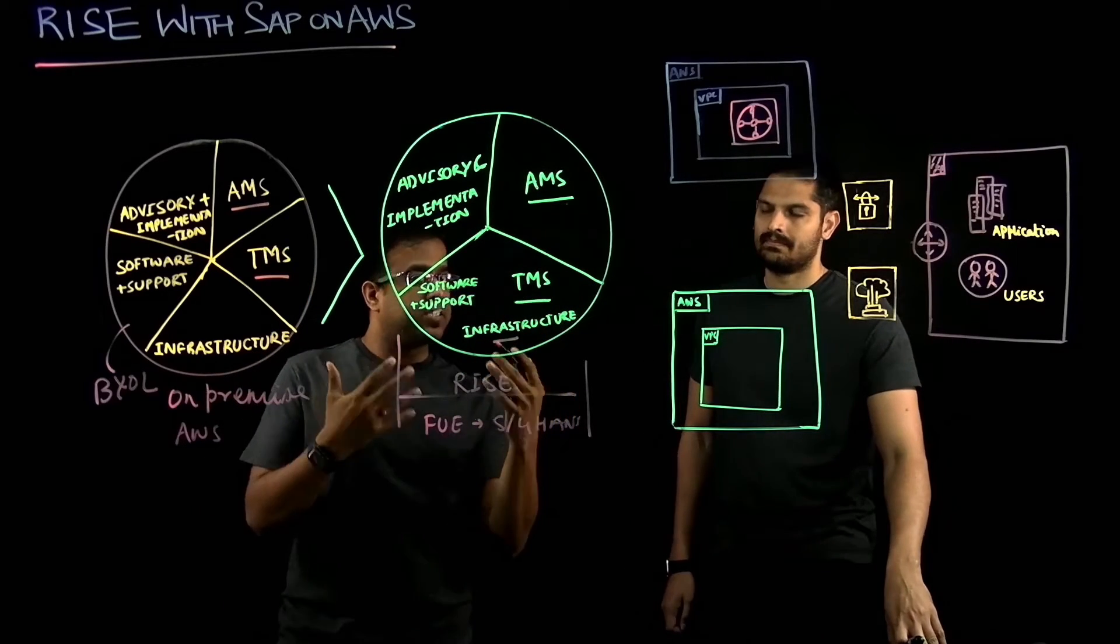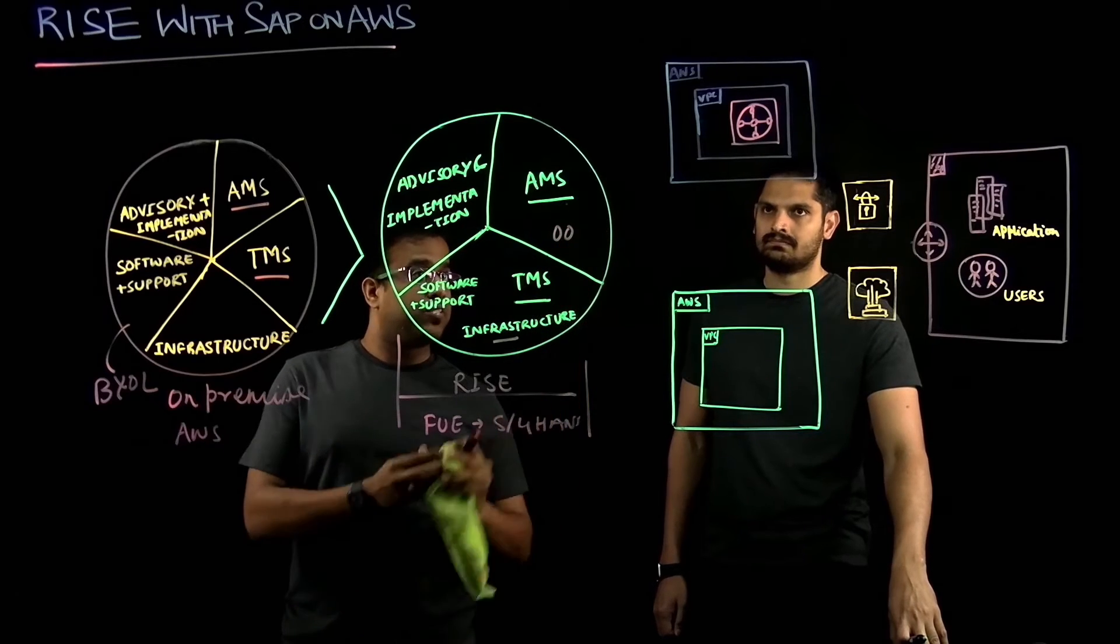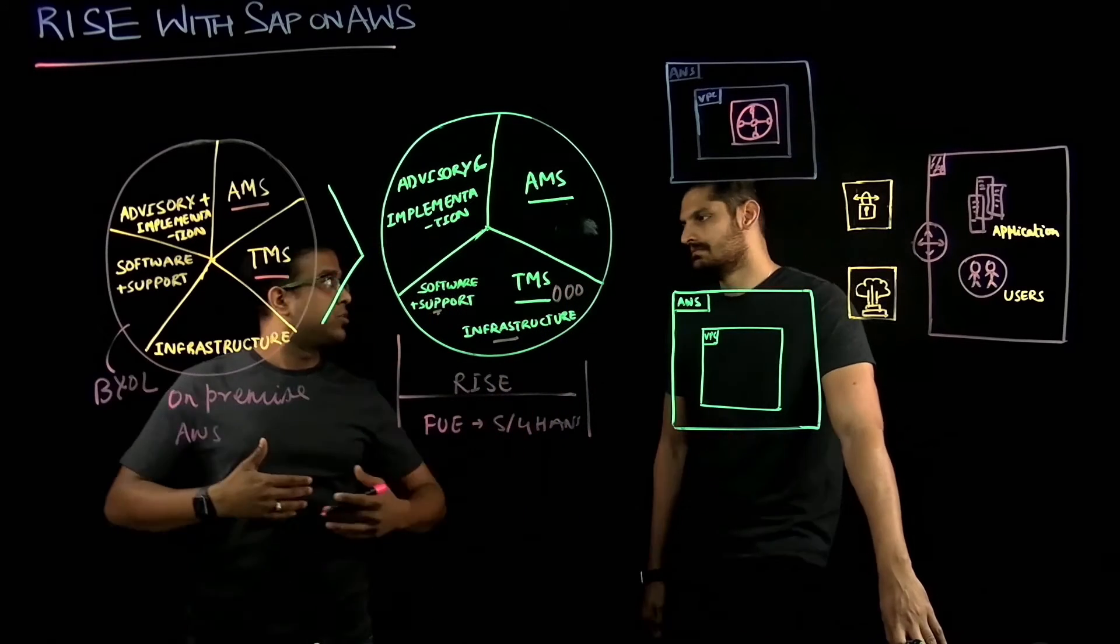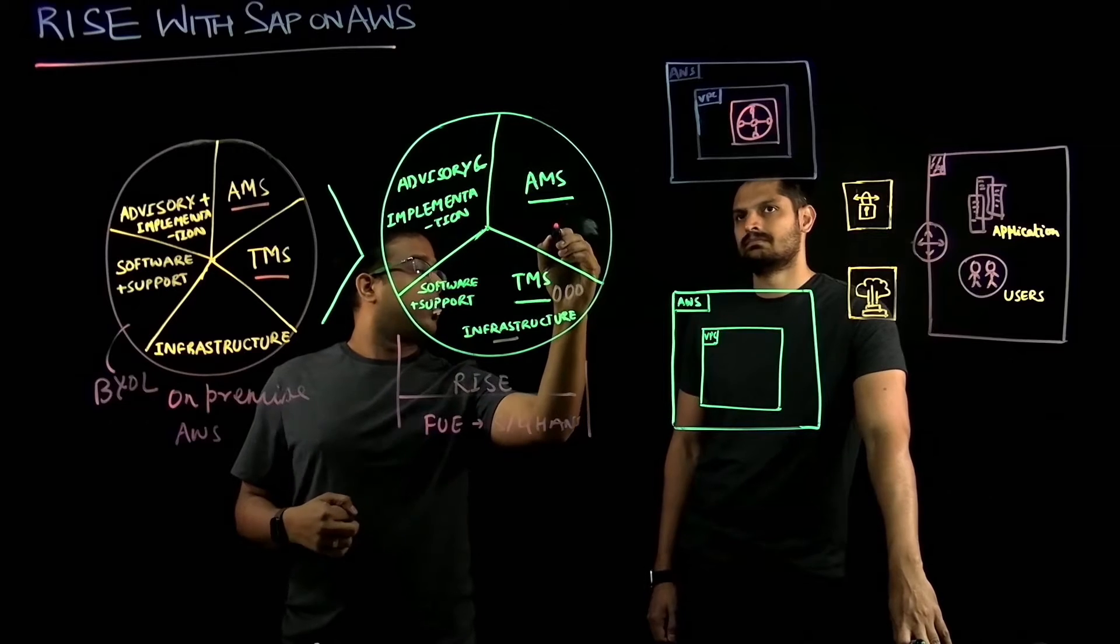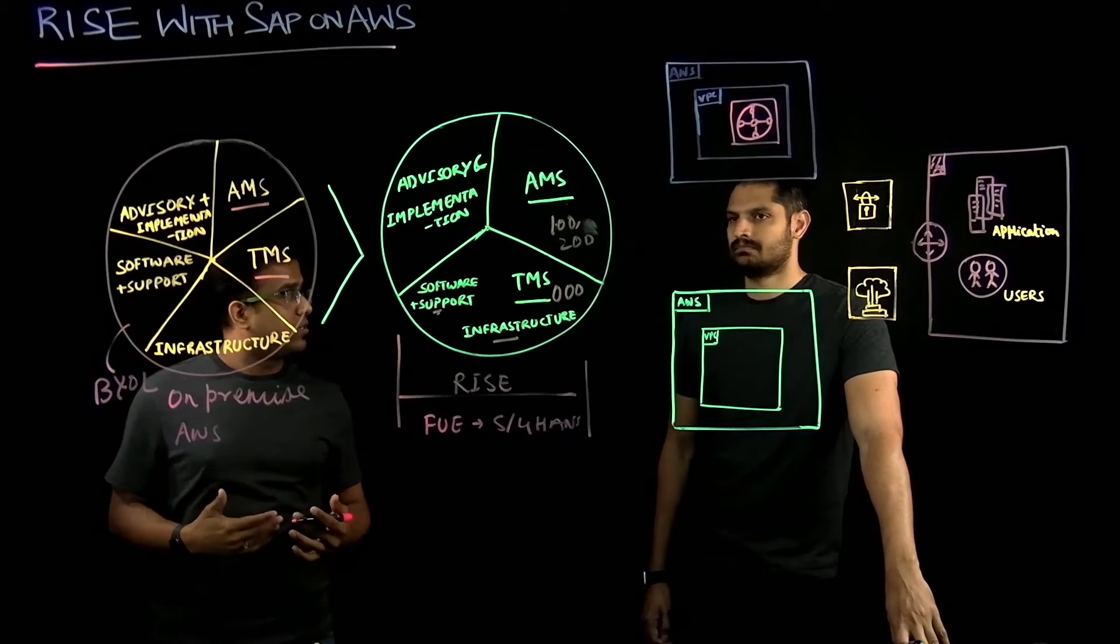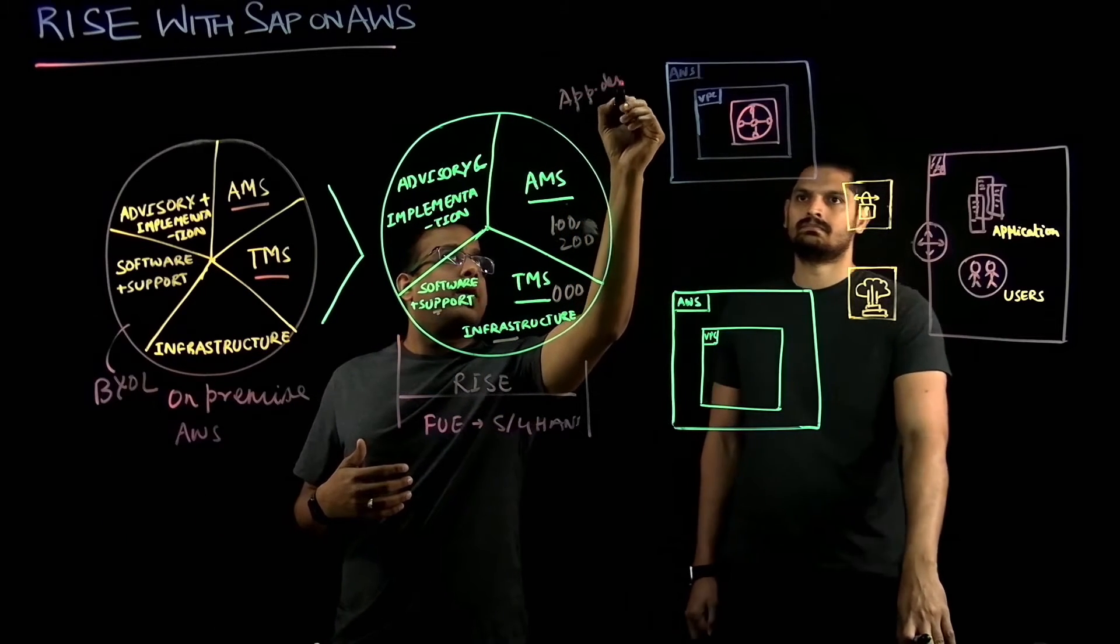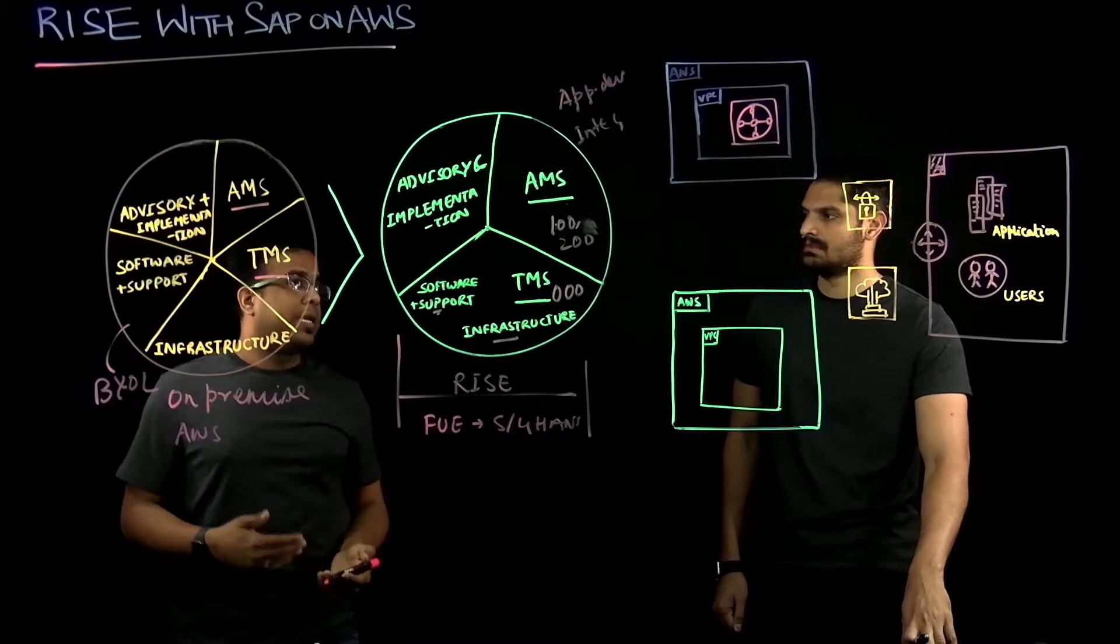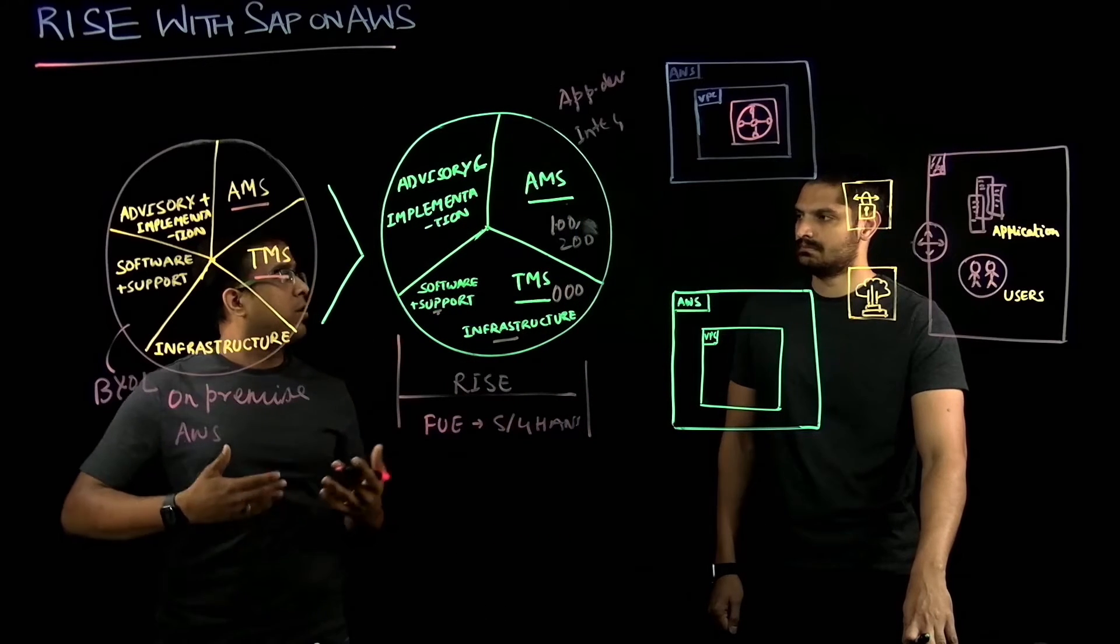Also, if you look at SAP system, SAP S4HANA, there is client 000 and productive client. So client 000 comes into TMS. That's technically managed by SAP. Any productive client, like 100 or 200 or anything like that, that's part of application managed services. So application development, application level integration, or application configuration is done as part of application managed services, which is under a partner or customer's choice.